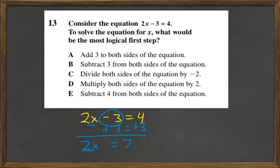Then I would divide both by 2, and I would get x equals 7 over 2, or 3 and 1 half. So the answer would be A.